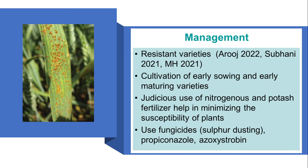Cultivation of early maturing varieties and judicious use of nitrogen and potash fertilizers is recommended. Sulfur dusting, propiconazole, and azoxystrobin fungicides can be used for disease management. That was all about brown rust of wheat. I hope you like this video.